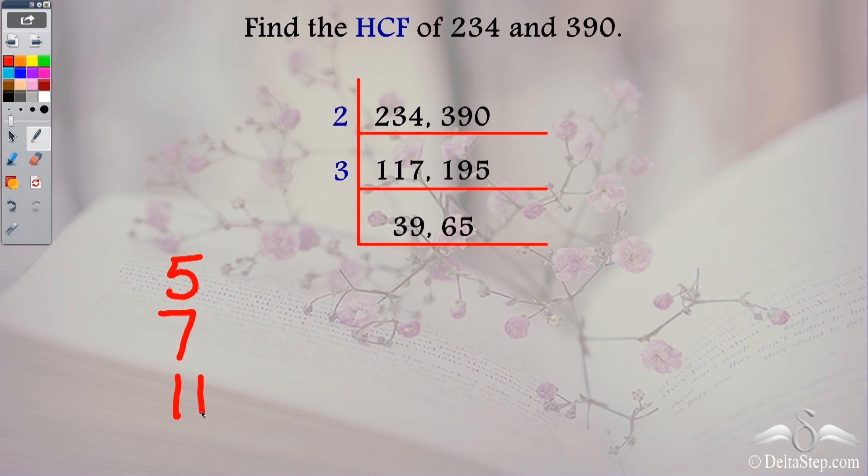Next prime number after 11 is 13 and if you check both the numbers are divisible by 13. So 13 into 3 is 39. So when you divide 39 by 13 you get 3 and when you divide 65 by 13 you get 5. Now I have got 3 and 5.